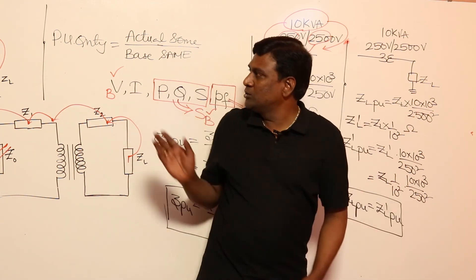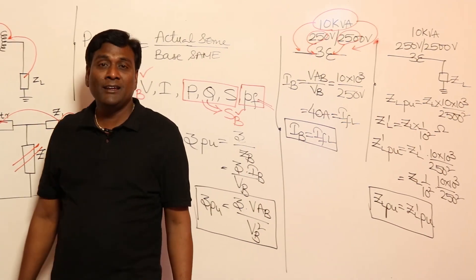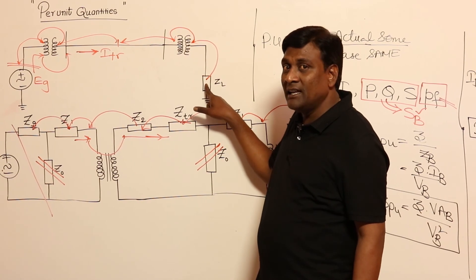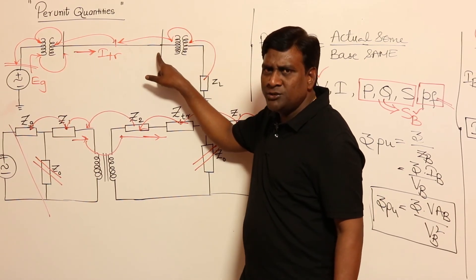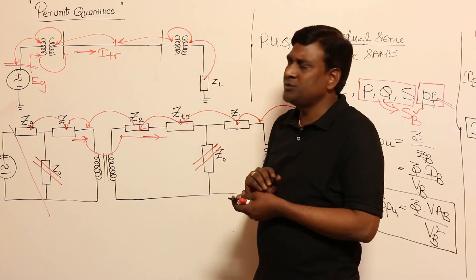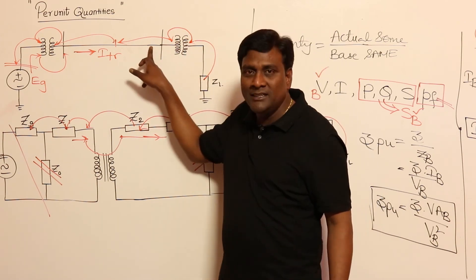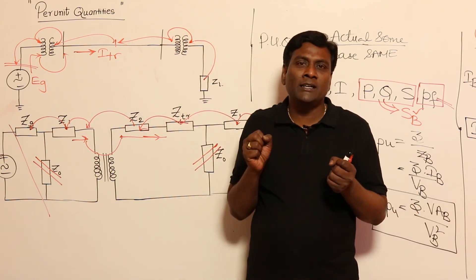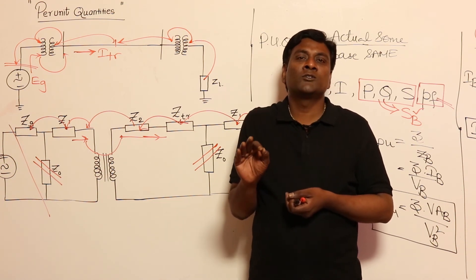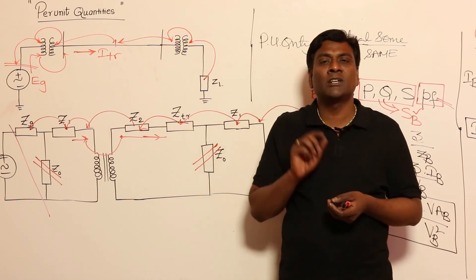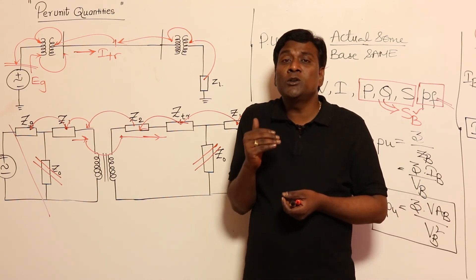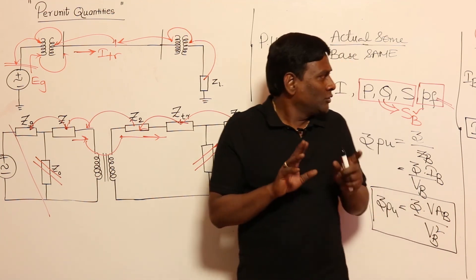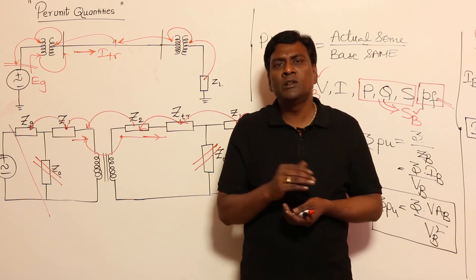So, converting all impedances to per unit means we no longer need to reflect impedances through transformer ratios — the transformer disappears from the analysis. However, to utilize per unit quantities, no-load currents of transformers must not be considered. It is not because they are negligible, but because per unit quantities will not allow you to use no-load currents in load flow studies. This is the advantage of per unit quantities. We will now solve problems.